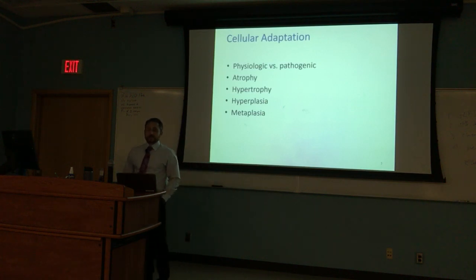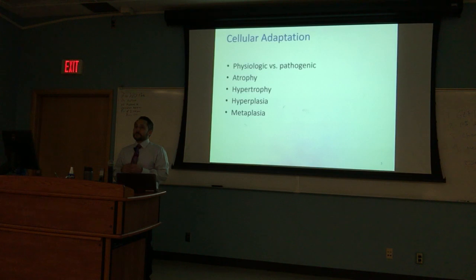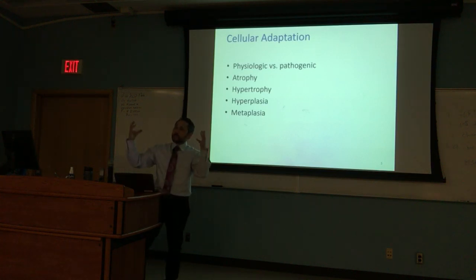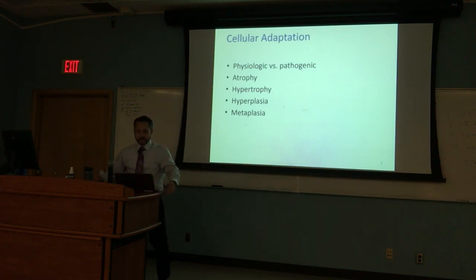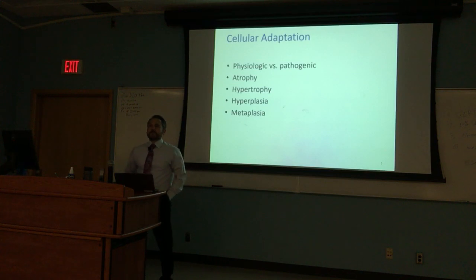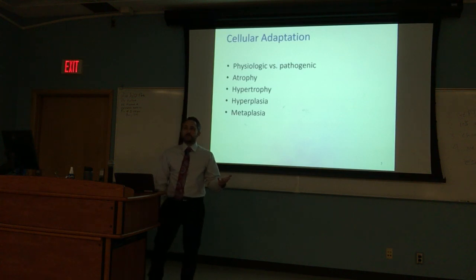Cellular atrophy is where the cell shrinks. Cellular hypertrophy is where the cell gets bigger. Hyperplasia is an increase in cell number — two become four, four become eight — not just cell size. And metaplasia, which we've already defined, is a reversible cellular change where one cell type is replaced by another. Clinical examples include Barrett esophagus and, as one of you mentioned, smoking.